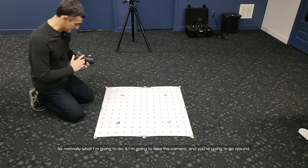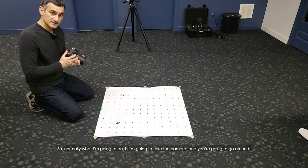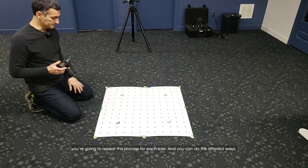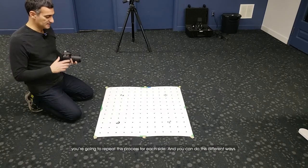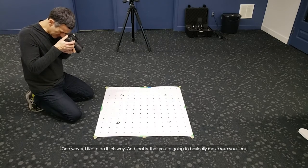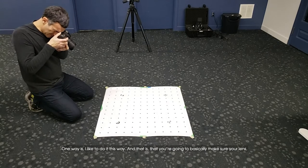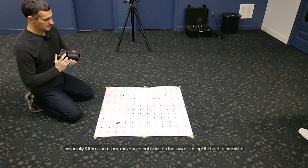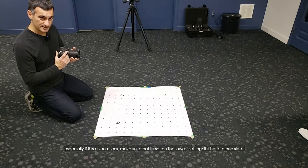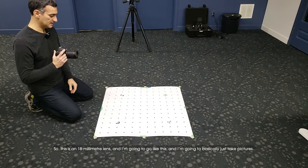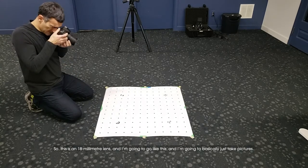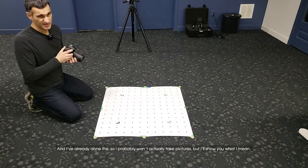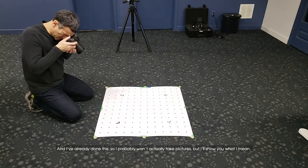Normally what I'm going to do is take the camera and go around, repeating this process for each side. You can do this different ways. Make sure your lens, especially if it's a zoom lens, is set on the lowest setting, hard to one side. This is an 18 millimeter lens and I'm going to take pictures.